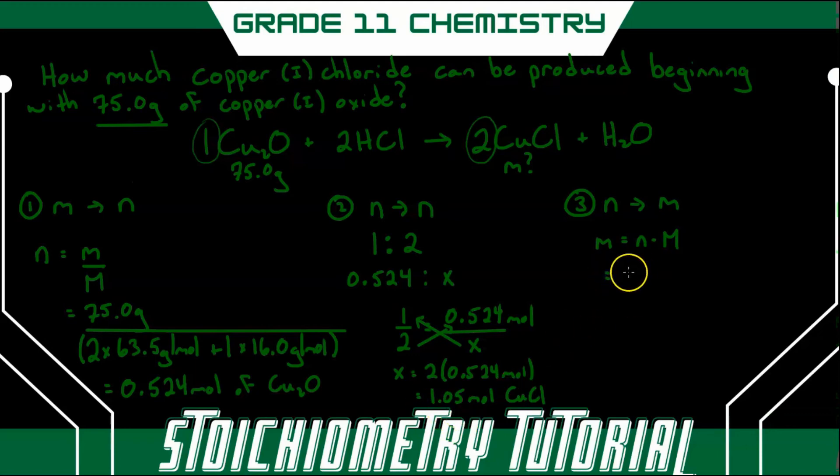So the number of moles m is 1.05. And our molar mass, just as we did in step one for copper oxide, we are going to do in step three for copper chloride. So multiplying it by, so we have one copper, which is 63.5 grams per mole, which we get from our periodic table.